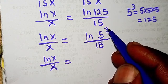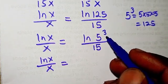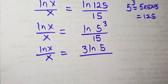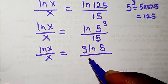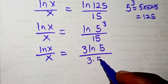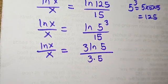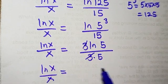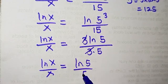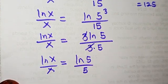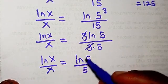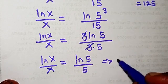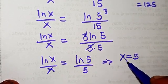According to the law of logarithm, the power 3 comes down: we have 3·ln(5) divided by 15. Don't forget that 15 can be split as 3 times 5. So the 3 cancels, and we are left with ln(x)/x equals ln(5)/5. We can see that ln(x) corresponds to ln(5) and x corresponds to 5.